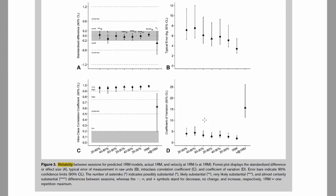The coefficient of variation for all prediction models was below or close to 5%, again with the exception of the velocity at 1RM which was 16%, showing considerable variation between sessions and within individuals.